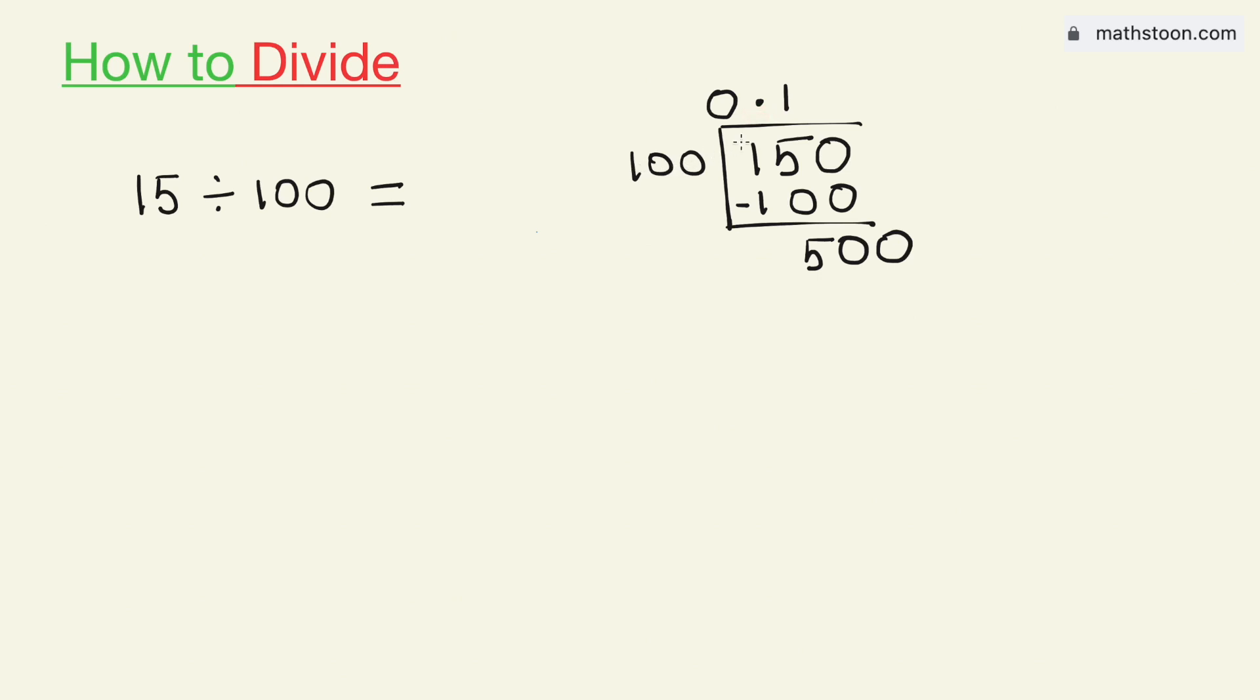We know that 100 times 5 is 500, subtract we get a zero.